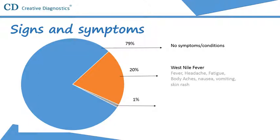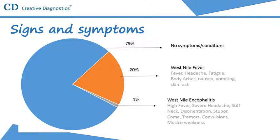The symptoms of severe disease, also called neuroinvasive disease, include high fever, severe headache, stiff neck, disorientation, stupor, coma, tremors, convulsions, muscle weakness, and paralysis. It is estimated that approximately 1 in 150 persons infected with West Nile virus will develop a more severe form of disease.